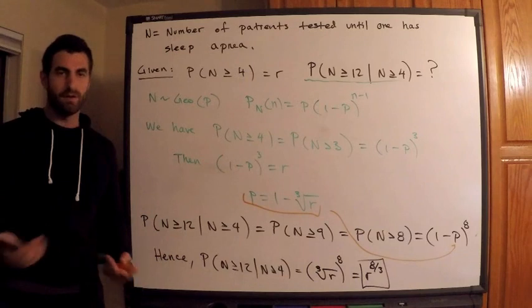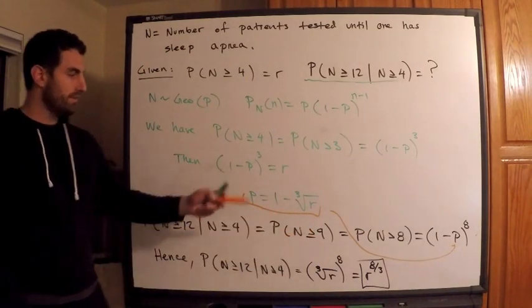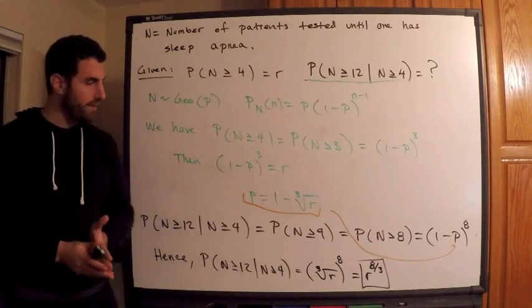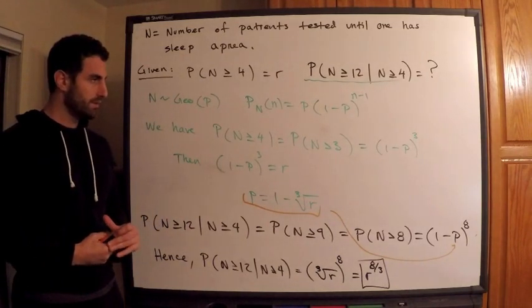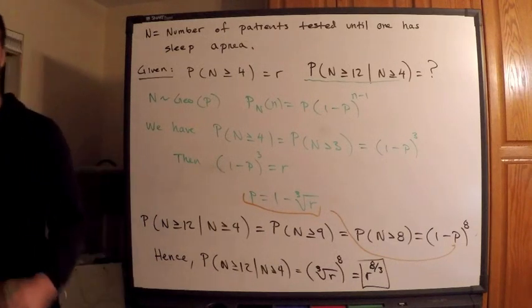So that takes care of it. If we were given numerical values of course we could have an actual probability, but this is the situation we were given and that is my answer. Please comment below questions, like the video, subscribe, thank you.